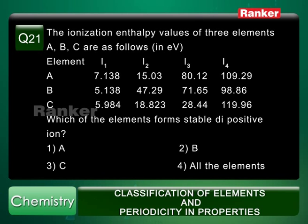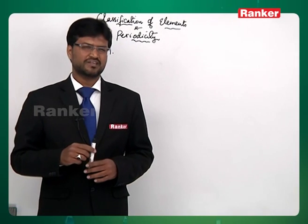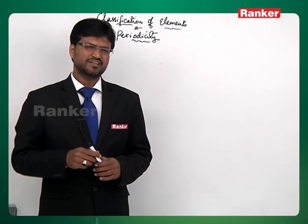You can realize here that there is a huge difference between I1 and I2. So this element is supposed to have only one valence electron.